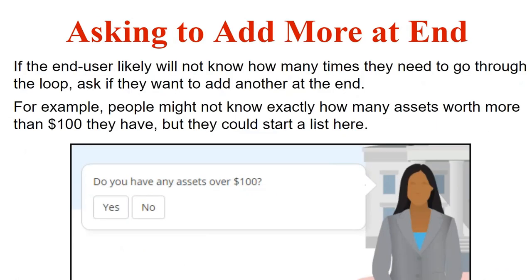The second way to do repeat loops in AdaJ Author is to ask to add more at the end. This asks the user directly if they want or need to go through the loop again once they've completed the series of repeated questions. This is used when the user won't likely know upfront how many times they need to go through the loop — for example, asking about assets over $100. They may not know the total off the top of their head, so they go through the loop and then say 'yes, I have one more' or 'no, I'm done.'